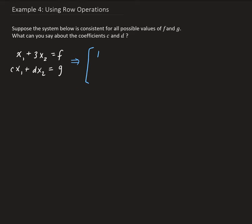So let's first put this into matrix form. We have 1, 3, f and we have c, d, and g. Since we have c in the second row, first column, we're going to take minus c times row 1, add it to row 2, and store it in row 2.